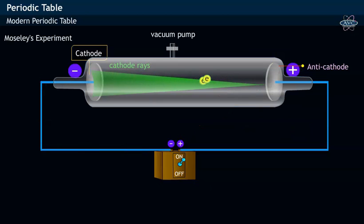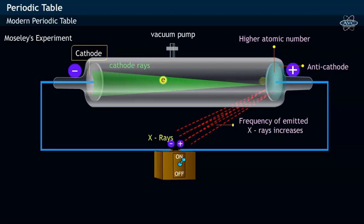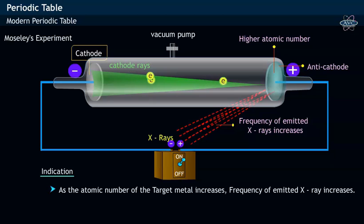When Moseley used the target metal with higher atomic numbers, it was observed that the frequency of emitted X-rays increased. This indicates that as the atomic number of anti-cathode increases, the frequency of emitted X-rays has increased.